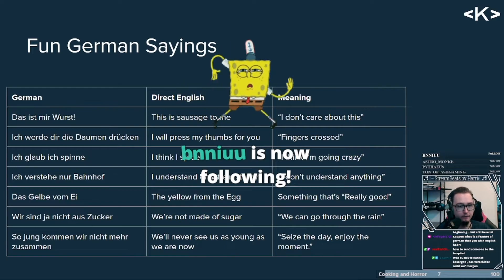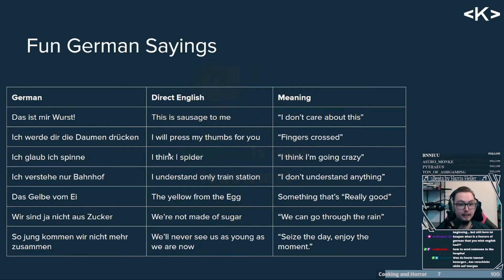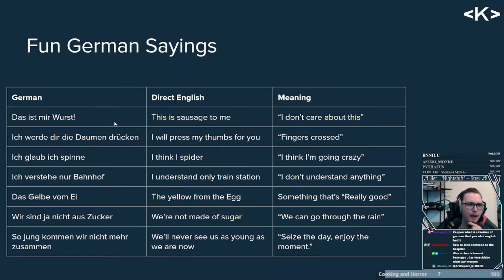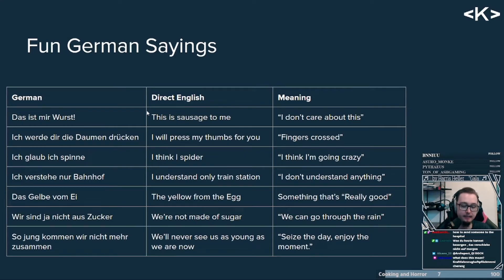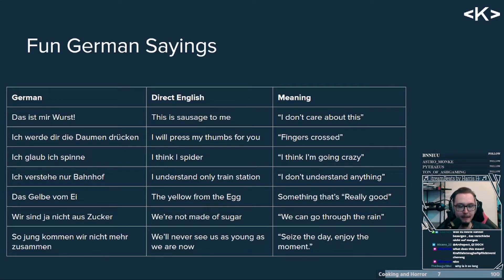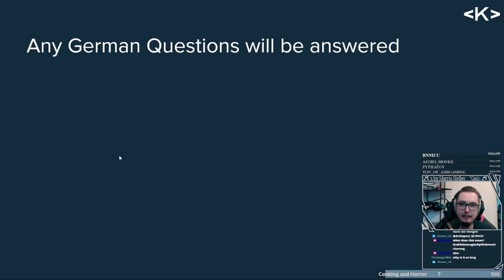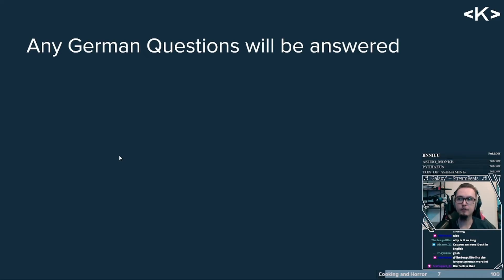What feature of German do you wish English had? That's a very good question. What does 'Kraftfahrzeughaftpflichtversicherung' mean? It is insurance for your car. Are you impressed that I can just read that — 'Kraftfahrzeughaftpflichtversicherung'? We also need 'doch' in English, you're absolutely right. Any German question will be answered — if you have questions about the German language, ask and we can do that in the last few minutes.